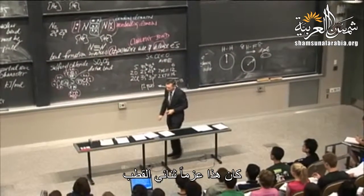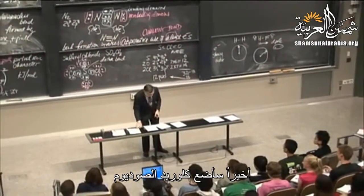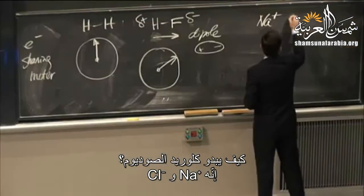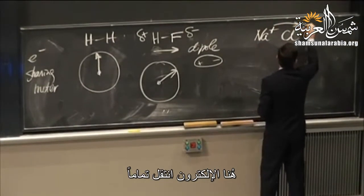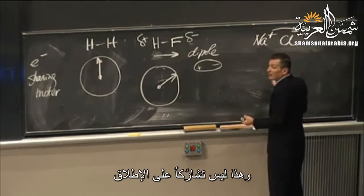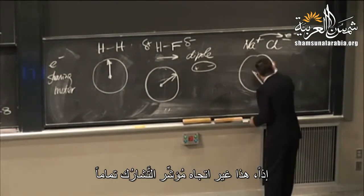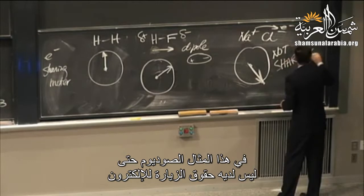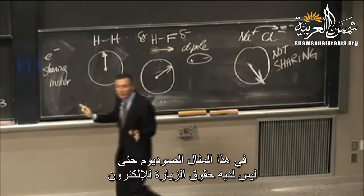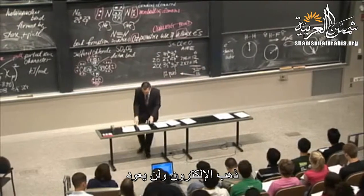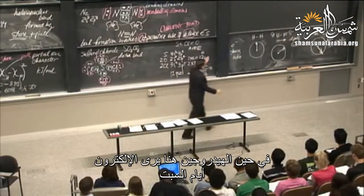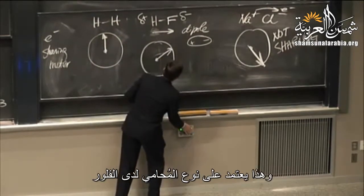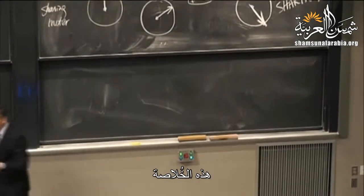For sodium chloride — Na-plus and Cl-minus — the electron has transferred completely. This is not sharing at all. Our sharing meter buries the needle. The sodium doesn't even get visitation rights to the electron. In HF, hydrogen gets to see the electron some of the time; in NaCl, the electron is gone entirely — depending on what kind of lawyer fluorine had.